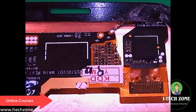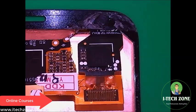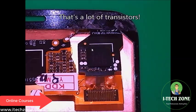Here we see a black rectangular component — this is the chip, one of the many chips on this Samsung S5. Inside the chip, there are many transistors — in some cases millions, and in other cases thousands or hundreds of thousands, depending on the complexity of the chip.